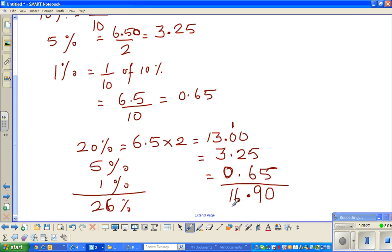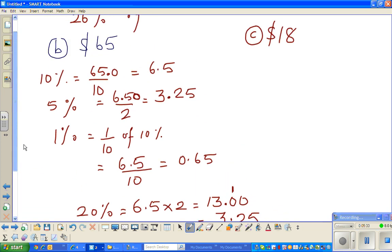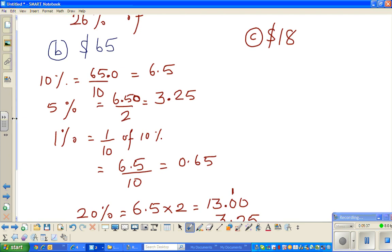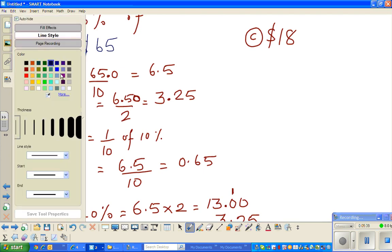So no remainder, and 13 plus 3 is 16. So 16.90 is 26 percent of, what was the number? I forgot, 65. Let me change color, this is too monotonous. So let me use a bright color.